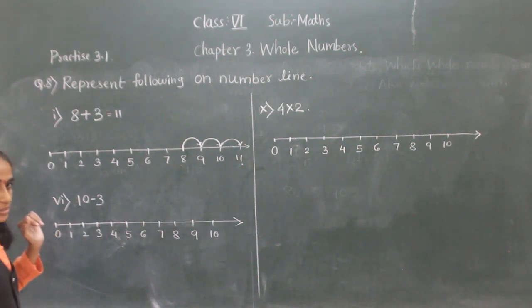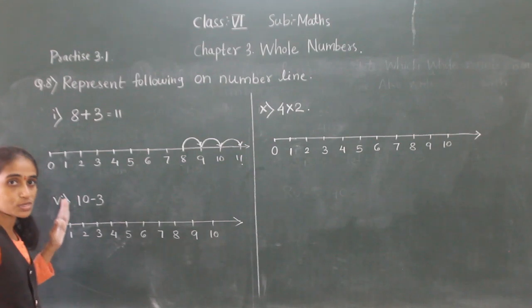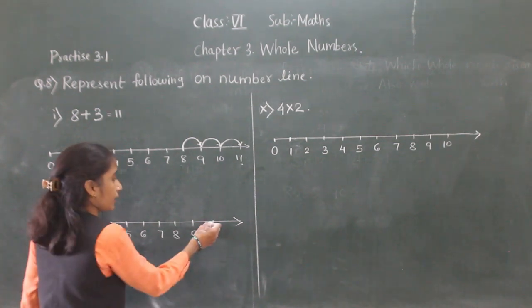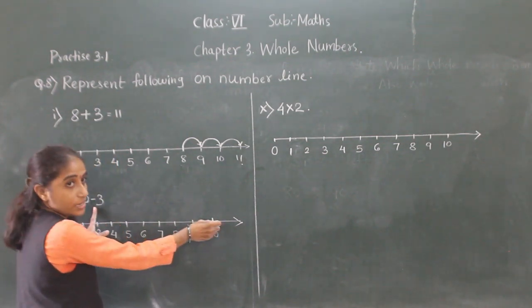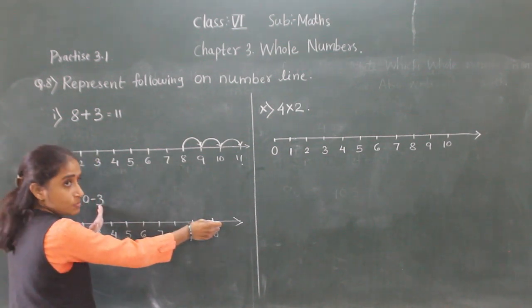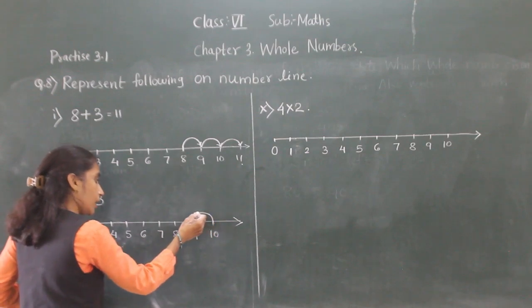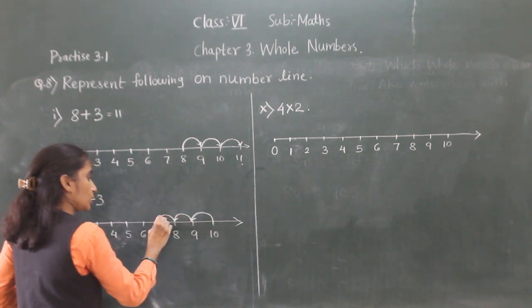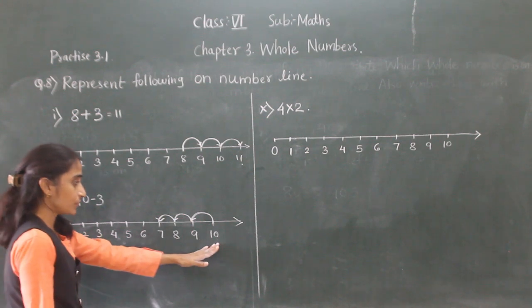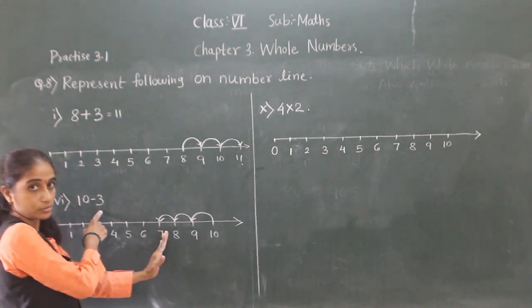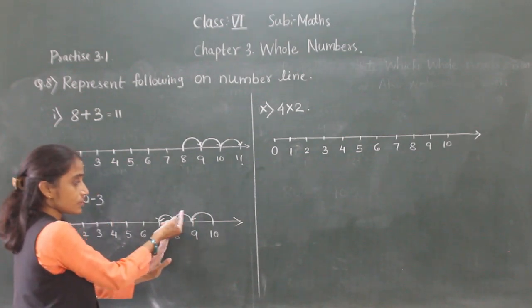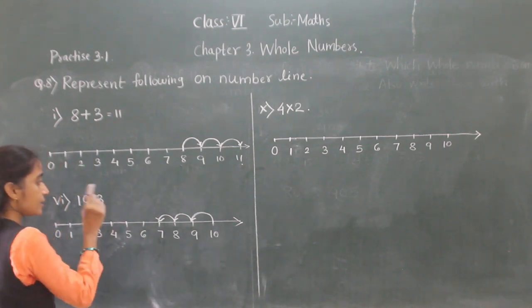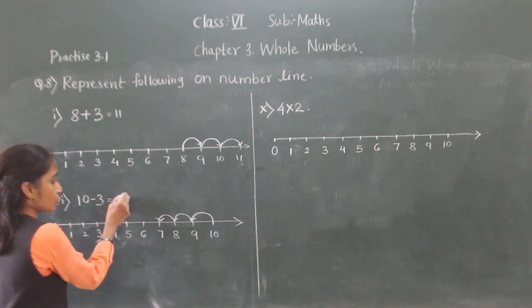Now 10 minus 3. Start from 10 and since it's subtraction, move towards the left — 3 jumps to the left: 1, 2, 3. We reach 7. So 10 − 3 = 7.